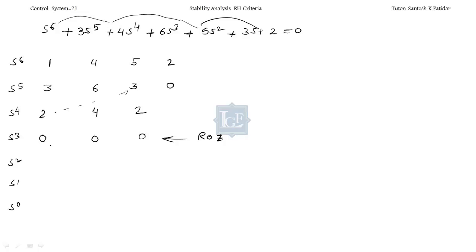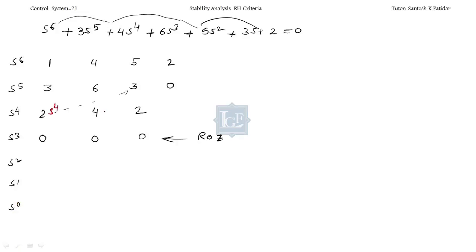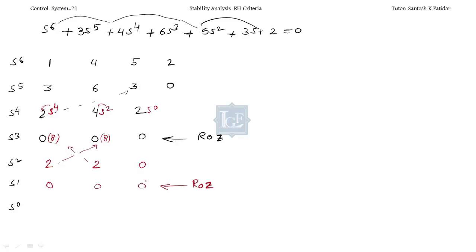I am framing the auxiliary equation: it is 2S^4 + 4S^2 + 2. When you differentiate it, you get 4S^3 + 8S as the replacement row. Computing the next row from 8×4 − 8×2 divided by 8 gives 2; then 2×8 − 2×8 gives 0, 0, 0. So again we are getting a row of zeros — the second ROZ. We frame the auxiliary equation again: 2S^2 + 2. Differentiating gives 4S, so the next row entry is 4×2 divided by 4 = 2, 0, 0.